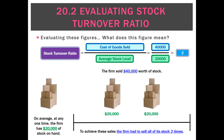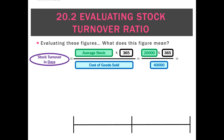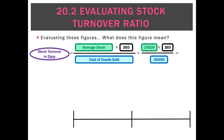We managed to sell out all $20,000 of stock once and then we managed to sell out on average $20,000 of stock twice. So we turned over our stock twice this period on average. An easier way to interpret it is to put it into days — stock turnover in days. Using this example we ended up with a ratio of 183 days.